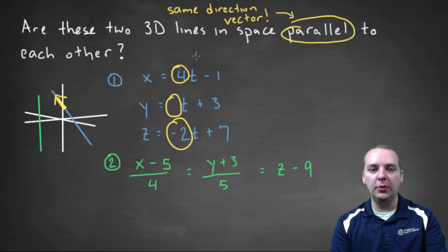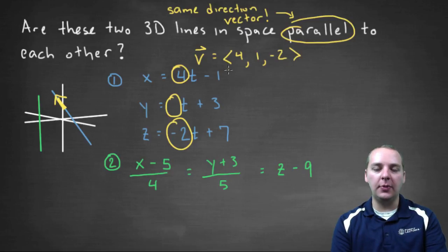So right off the bat I can tell the blue line's direction vector will be the vector 4 comma 1 comma negative 2. So let's hold on to that one.